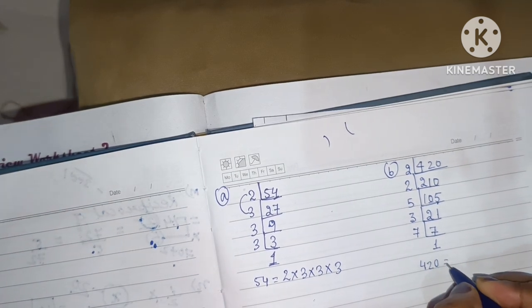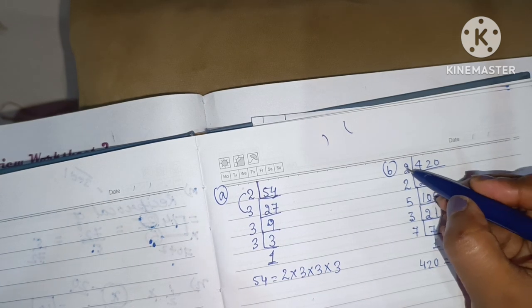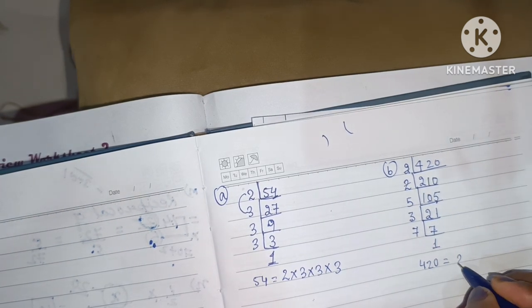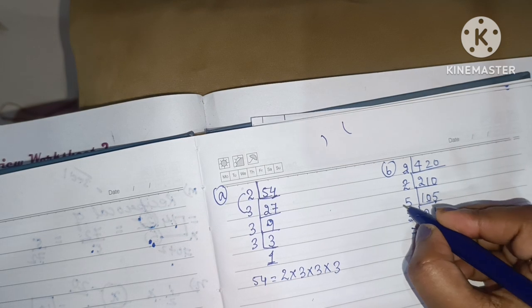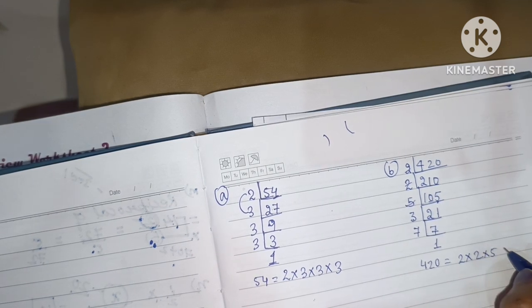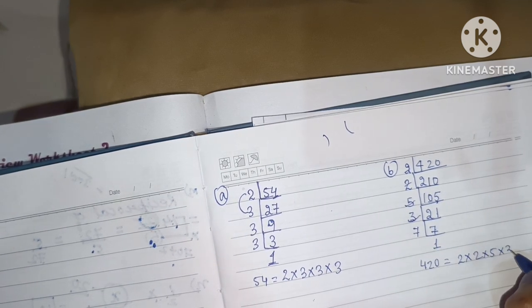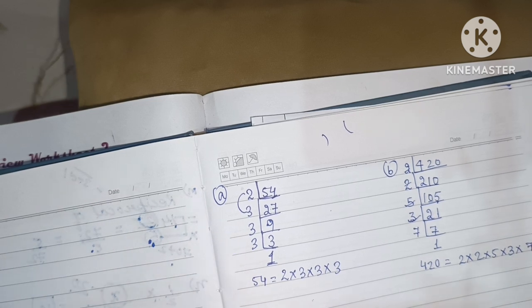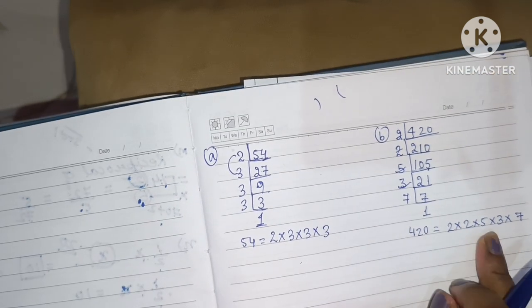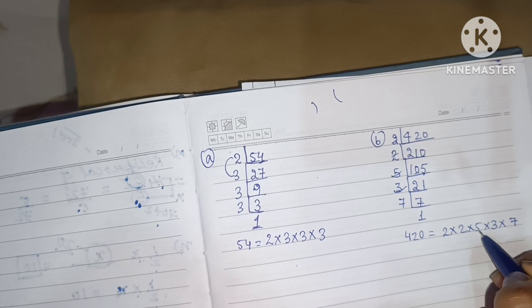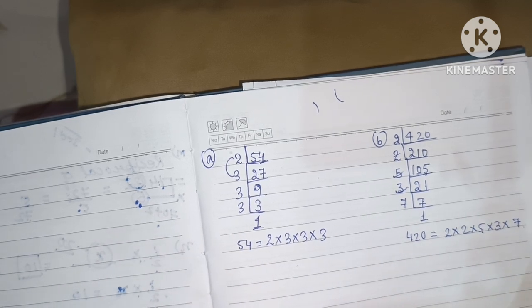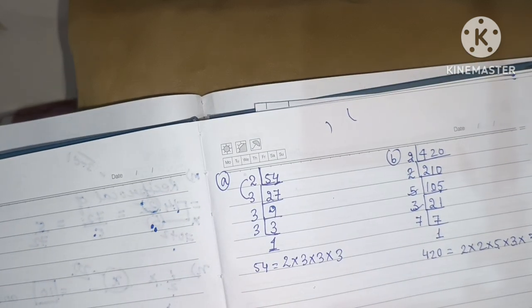So, 420 is equals to, how many times 2? 1, 2. 2 into 2, then into 5, then into 3, then into 7. So, the product of 420 will be 2 into 2 into 5 into 3 into 7. So, this is only the prime factorization.